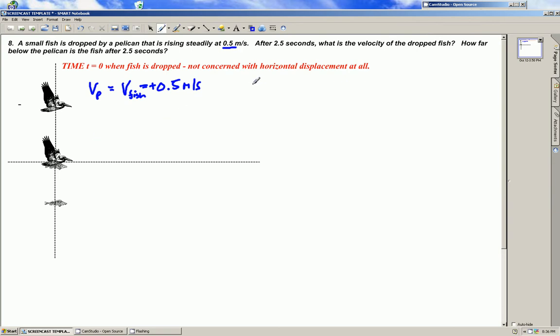We know that the acceleration of the pelican in the vertical direction is zero. Its initial velocity is equal to its final velocity is equal to 0.5 meters per second throughout this problem, throughout the 2.5 seconds.